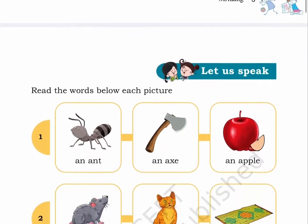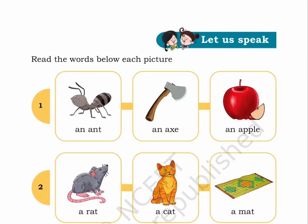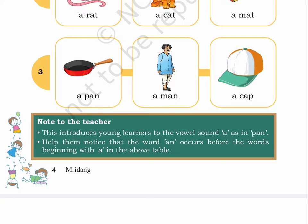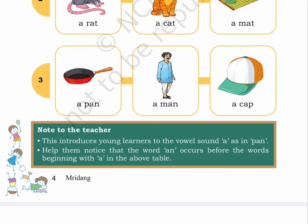Page 4. Let us speak. Read the words below each picture. Here we see nine boxes. In each of the boxes there is an image. The images are: an ant, an axe, a rat, a cat, a mat, a pan, a man, a cap. Note to the teacher: This introduces young learners to the vowel sound 'a' as in pan. Help them notice that the word 'an' occurs before the words beginning with 'a' in the above table.